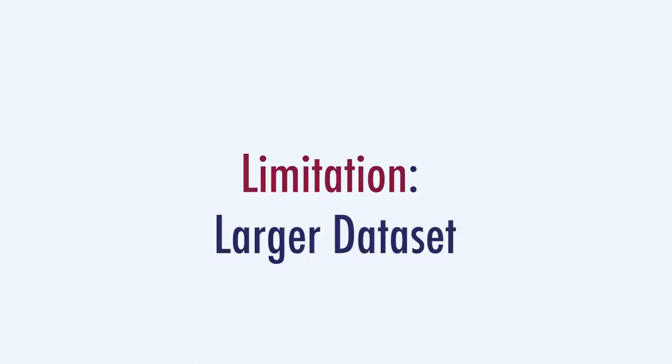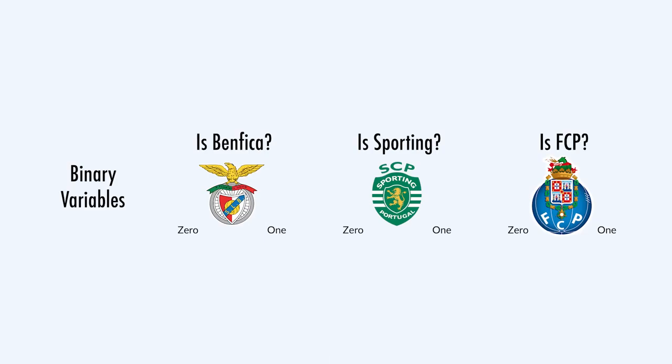Can you indicate one problem of the one-hot encoding approach? The obvious problem is that we can end up with an exploding number of binary variables. If we were clustering the favourite soccer team of different people, we would need a different dimension for each different soccer team — quite exhausting and computationally intense.